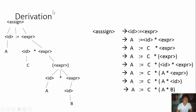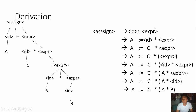This is how we create the derivation. First of all, assign — as we can see, assign is equal to ID equals expression. This is the first part. Then we get to the next part: A equals ID then times expression.